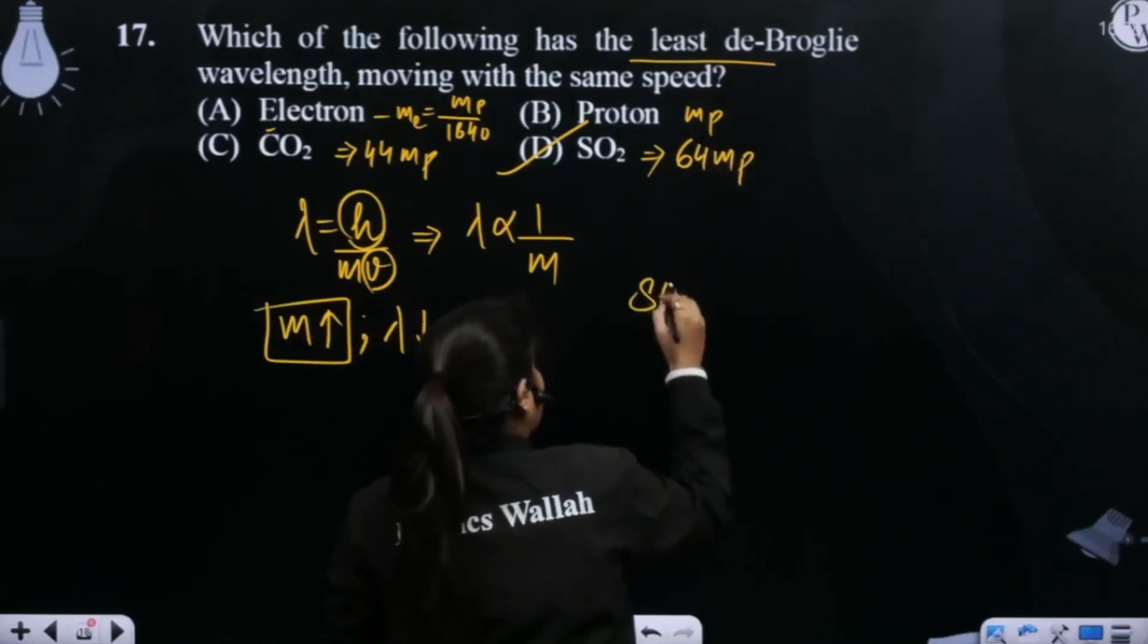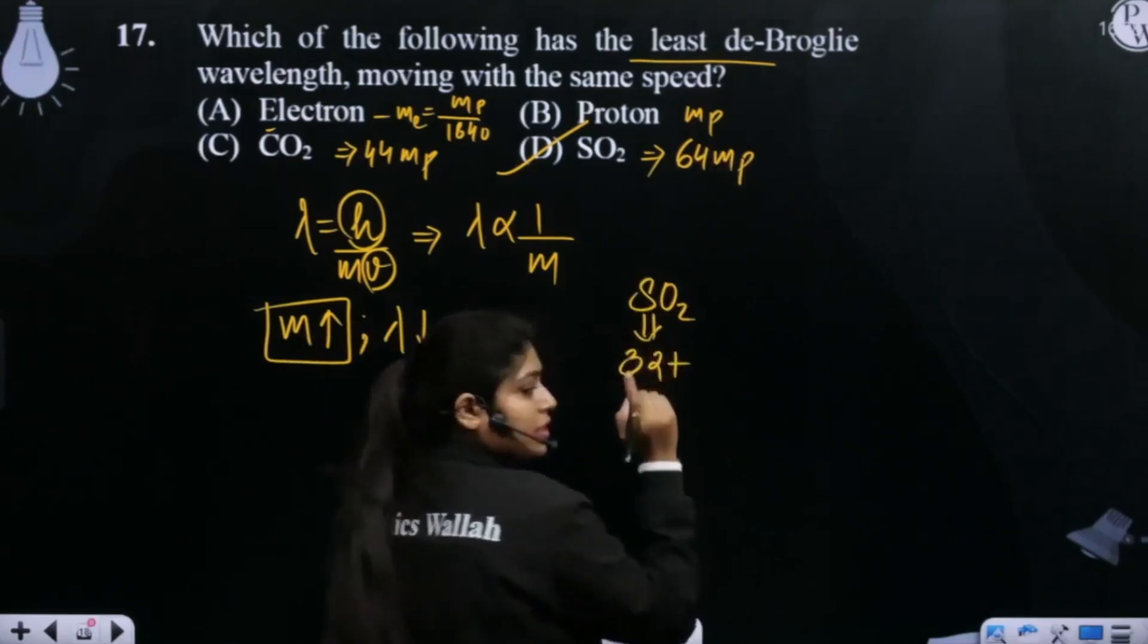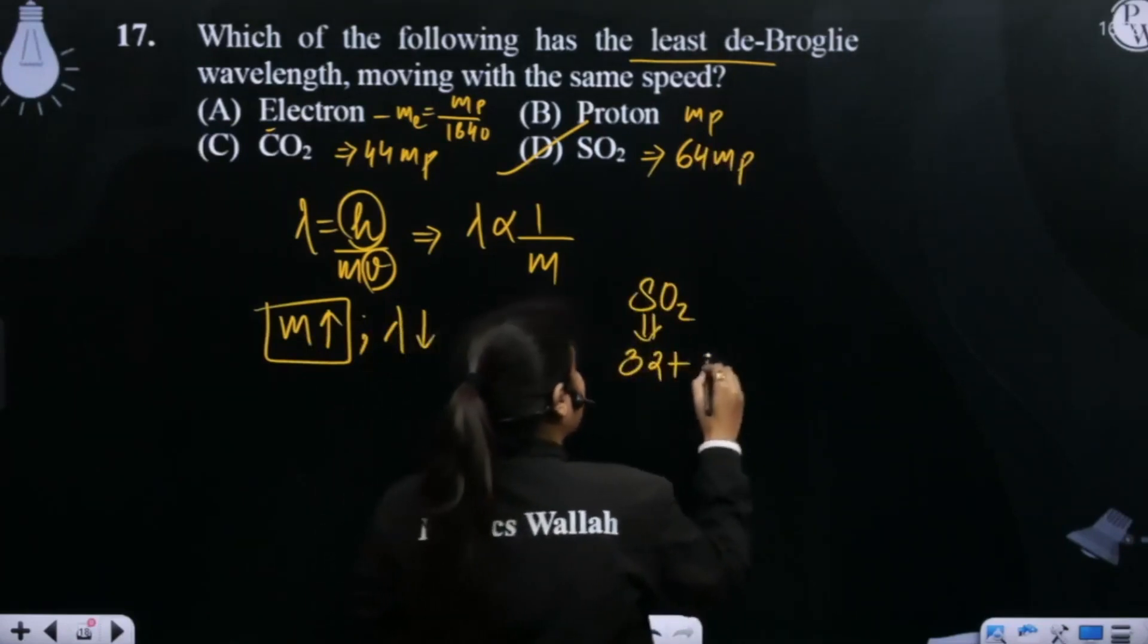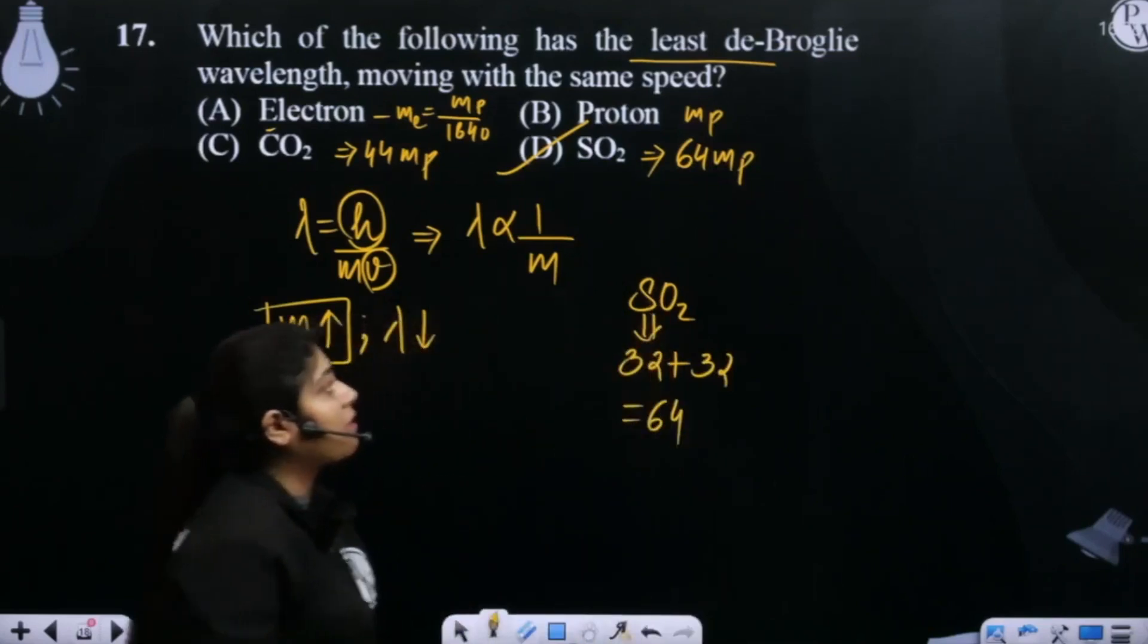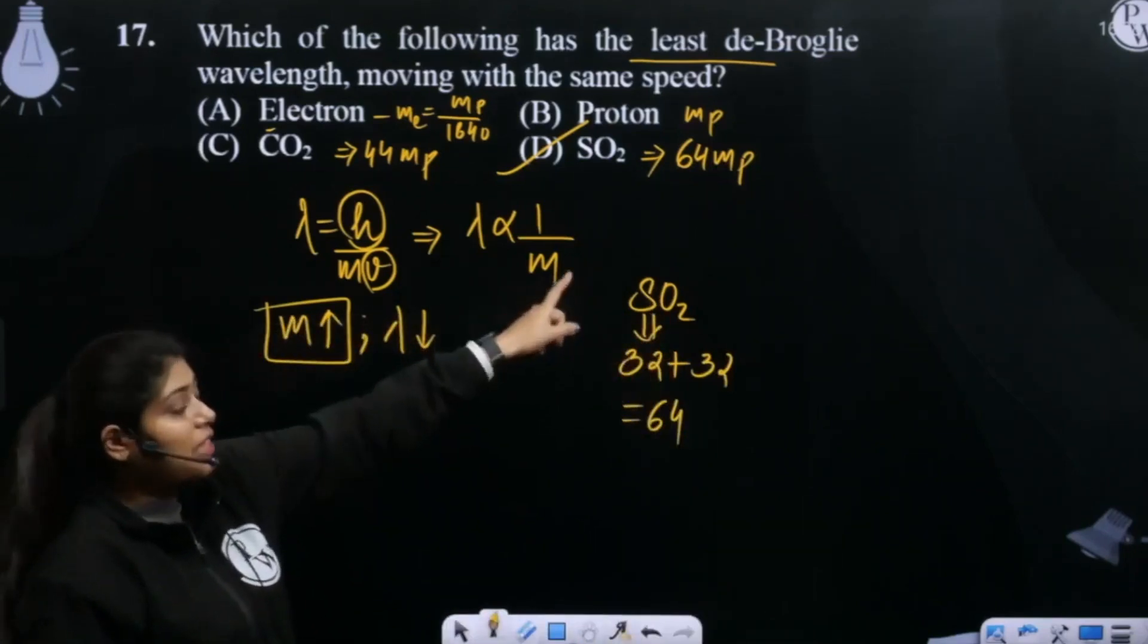Mass number. How much is SO2? Sulfur is 32. Oxygen is 16. 2 oxygen is 32. This gives us 64. So this gives us 64. So how much is this? Mass of the proton is 64 times.